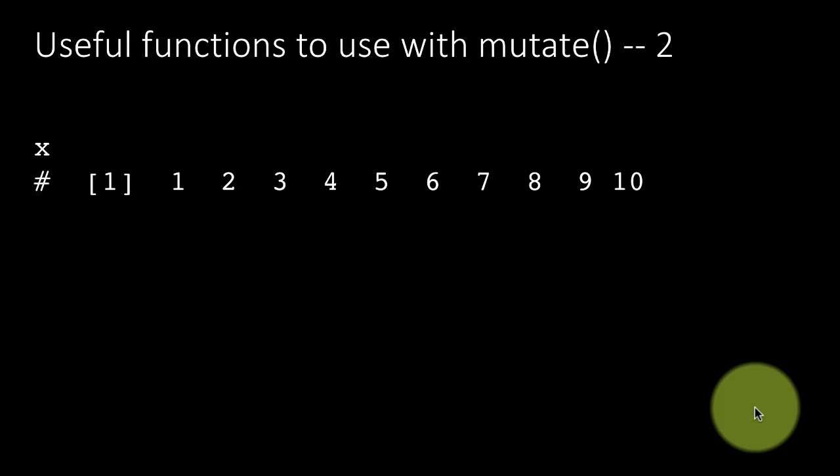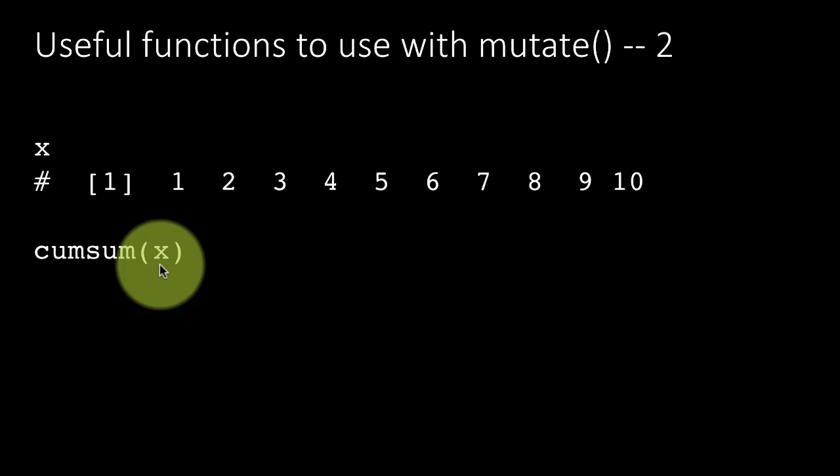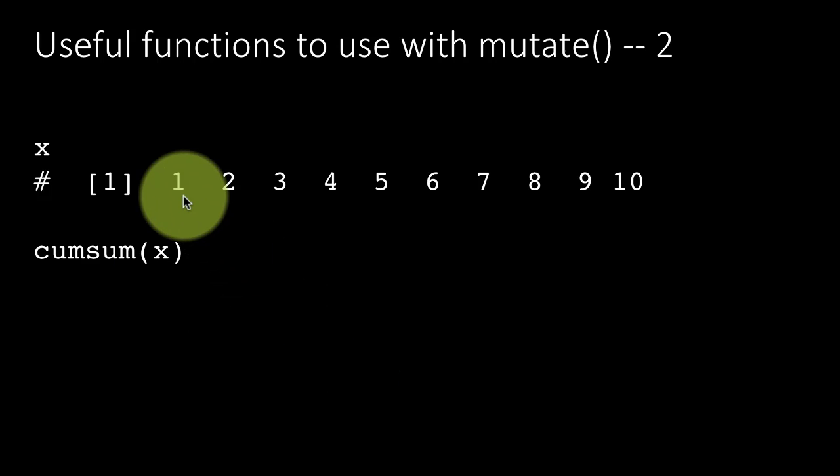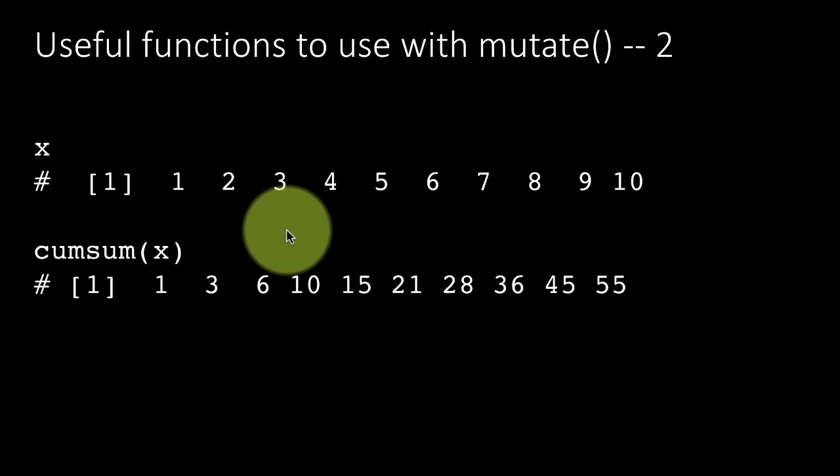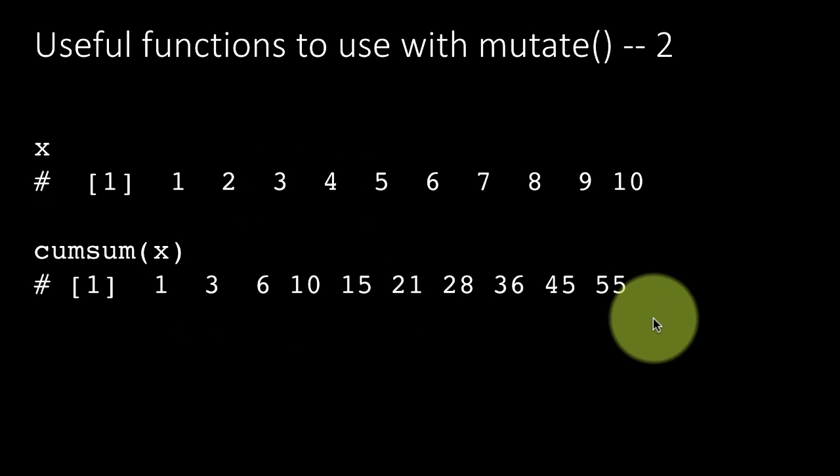There are other useful functions as well. So for example, you can do cumulative sum of x. That is, the initial value of cumulative sum will be 1. The next value will be 1 plus 2, which is 3. And the next value will be 3 plus 3, 6 and 6 plus 4, 10. It's a cumulative sum, a running total of a particular vector.